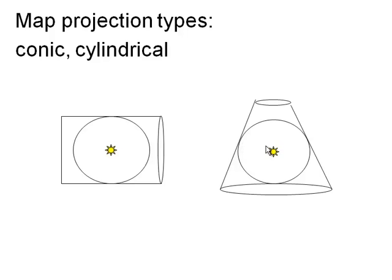The first standard parallel touches the globe at 55 degrees north, and the second standard parallel touches the globe at 65 degrees north. At those two standard parallels where it touches the globe, the scale factor is 1.0 — there's no scale distortion. Above those parallels, everything is too large, and the scale factor will be greater than 1, because we're essentially projecting from the globe to the piece of paper. In between the two standard parallels, the piece of paper is actually cutting through the globe, and the scale factor will be slightly too small.